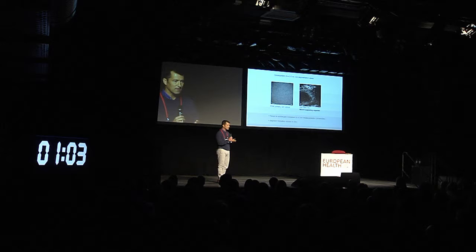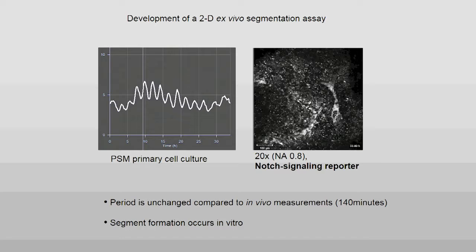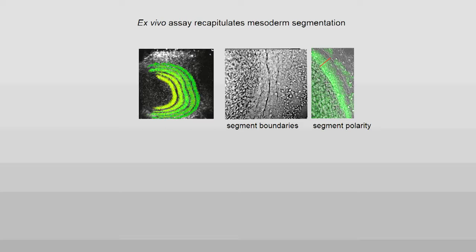These oscillations are very robust. They have the same period as we see in vivo. And importantly, even in vitro, these segments — these organs — do form. You will see that where the waves stop in the periphery, the boundary between cells is formed. These are molecularly well-defined segments. So this is really segmentation in 2D, and we have used this assay extensively.